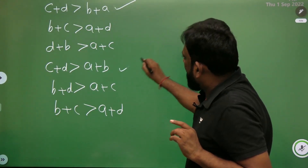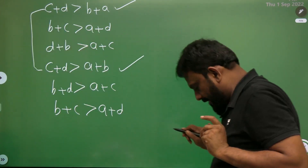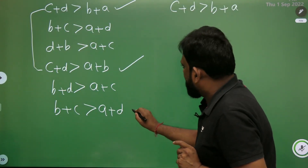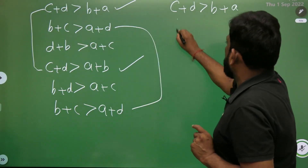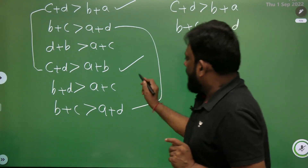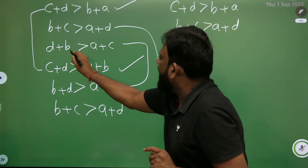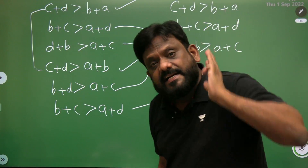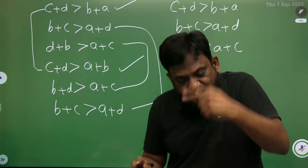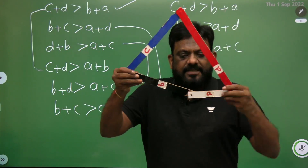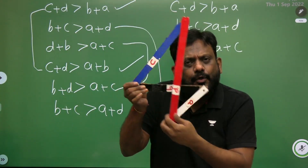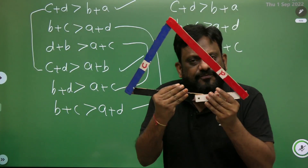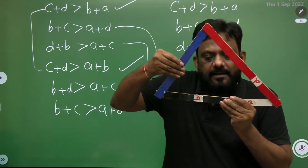Now let us identify the distinct conditions. C plus D greater than A plus B, and B plus C greater than A plus D are two. Observing also D plus B greater than A plus C — these are the three distinct conditions obtained when one of the links is rotating completely.